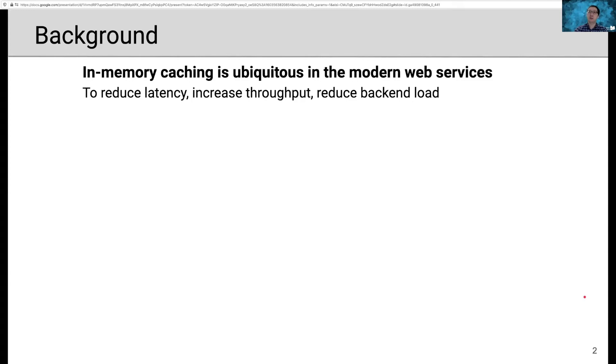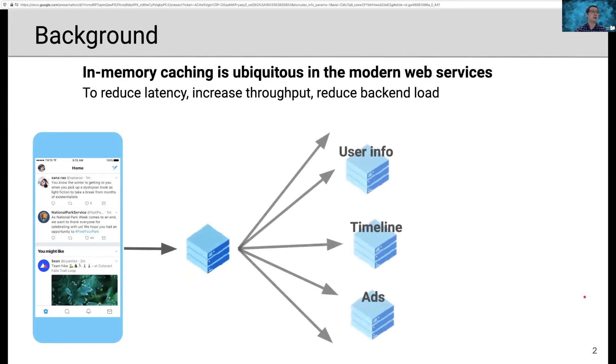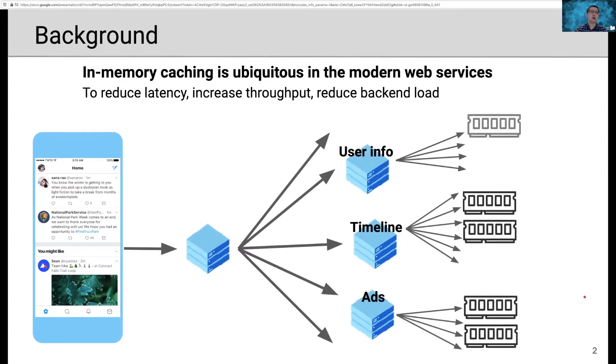In-memory caches are widely deployed in modern web services. Let's take Twitter as an example. When you open the Twitter app, the app sends requests to the edge servers. The edge server sends requests to different services. Each service sends a bunch of requests to different backends. In order to reduce latency, increase throughput and reduce backend load, in-memory caches are deployed between the services and the backend. Therefore, user requests can be served in a timely manner.